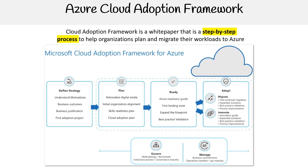Adopt: the actionable phase where existing workloads are migrated to Azure. This entails the first workload migration, understanding expanded scenarios, validating best practices, and making process improvements. Innovate: transform services in the Azure environment using innovation guides, exploring new scenarios, validating best practices, and furthering process improvements.